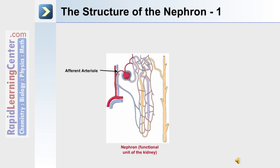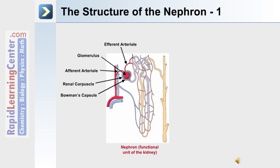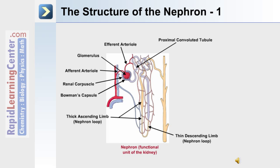The afferent arteriole brings blood into the glomerulus for filtering. The efferent arteriole removes filtered blood. The renal corpuscle and Bowman's capsule interact with the glomerulus for filtering and producing filtrate. The filtrate leaves this area and travels through the proximal convoluted tubule and eventually into the thin descending loop.